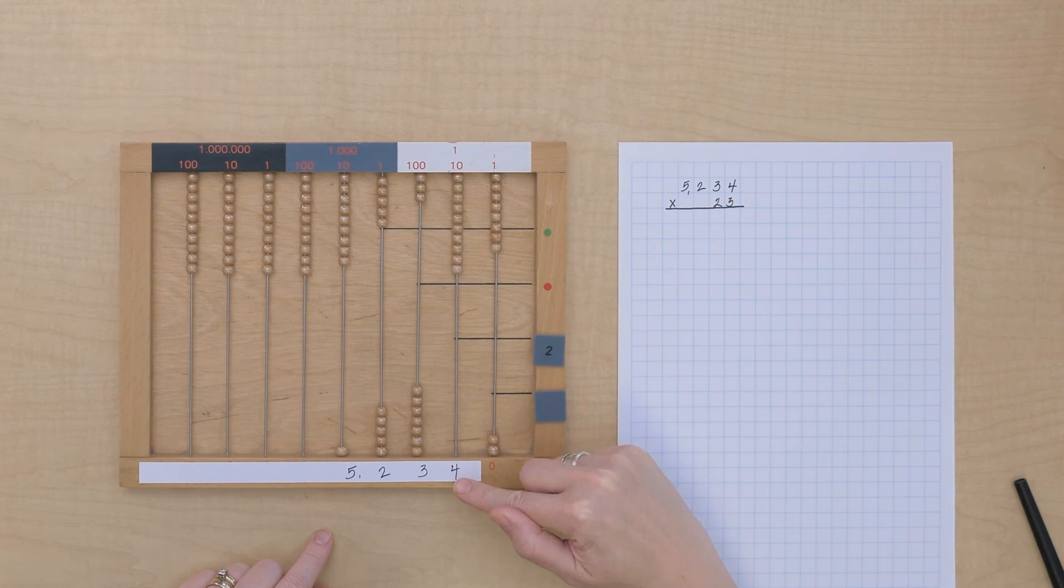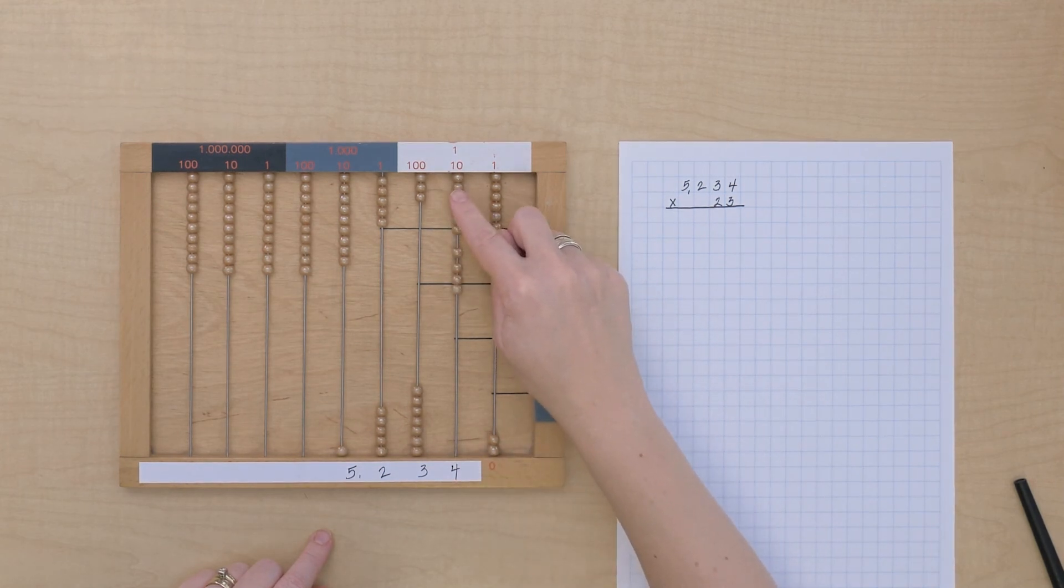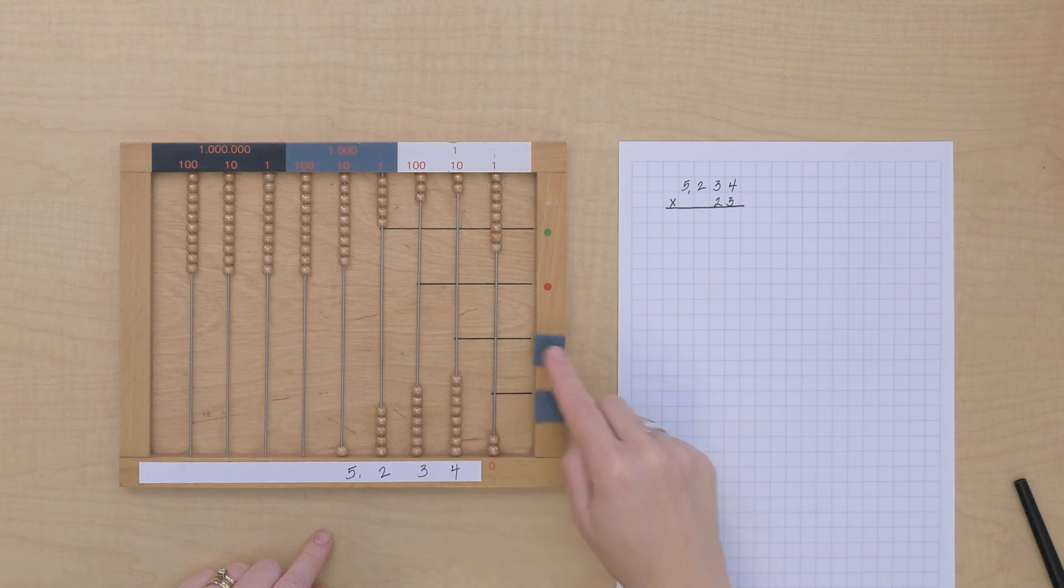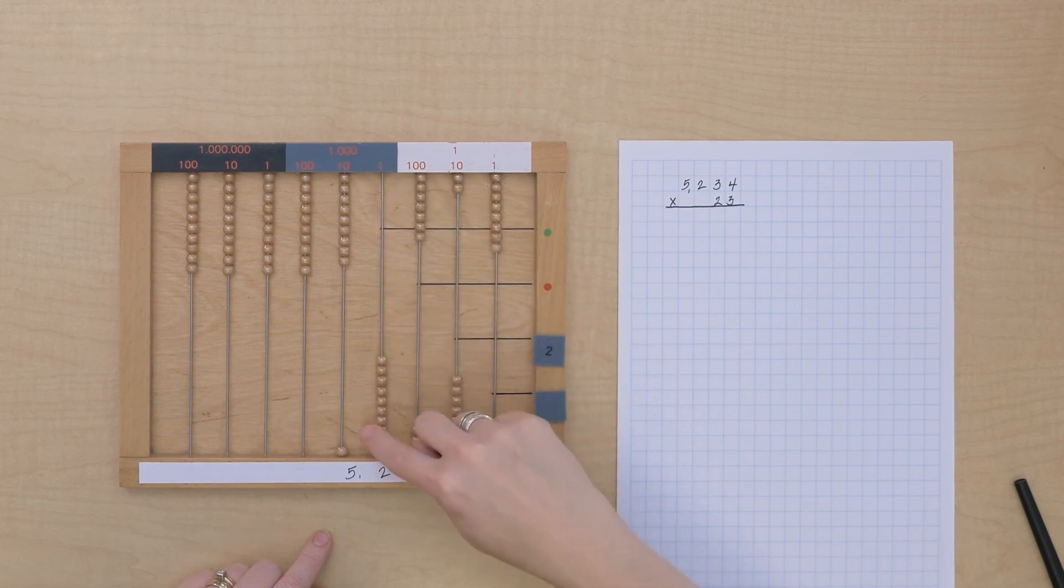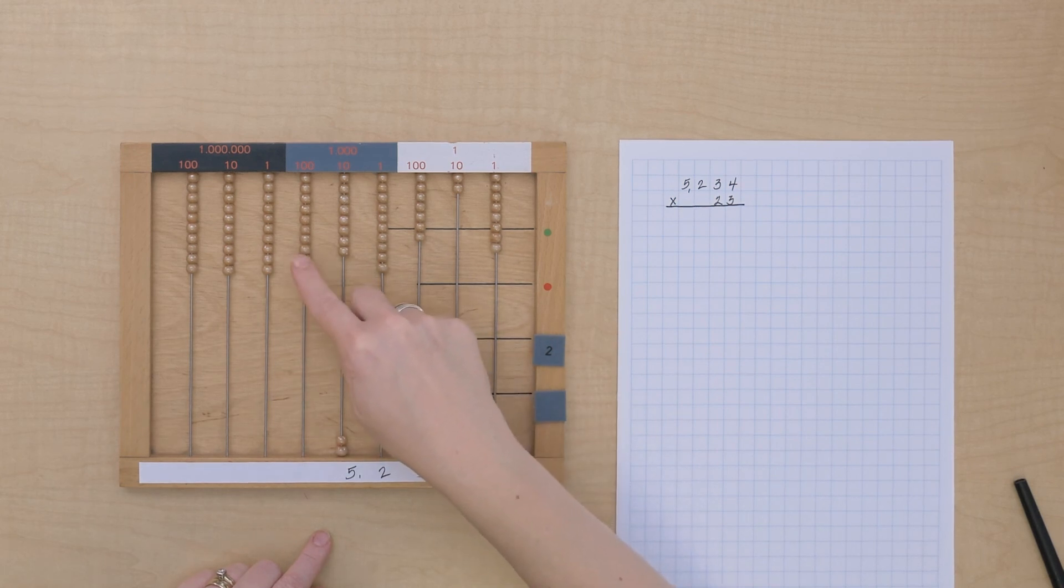All right, so 4 times 2 is 8, 3 times 2 is 6, 1, 2, 3, 5, 6. 2 times 2 is 4, 2, 4, and 5 times 2 is 10, so that just means 1 of these.